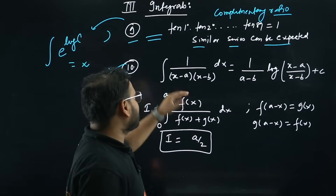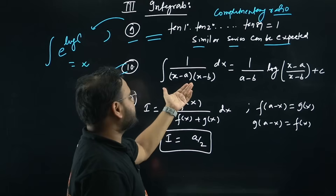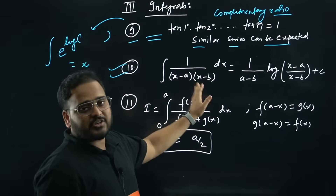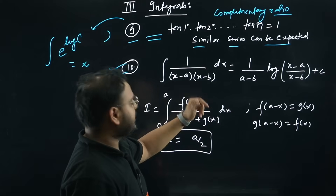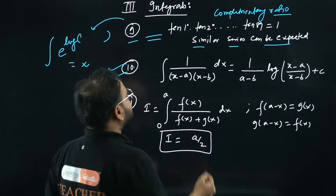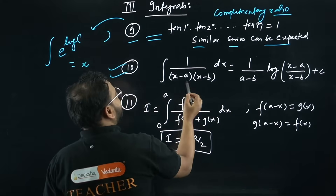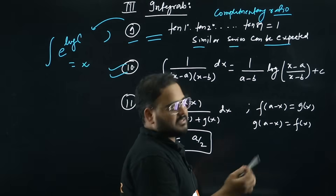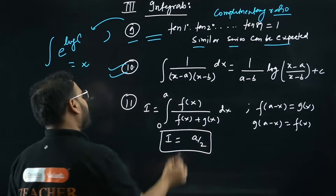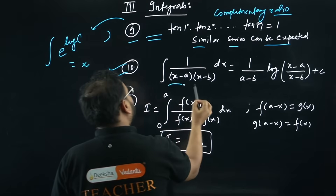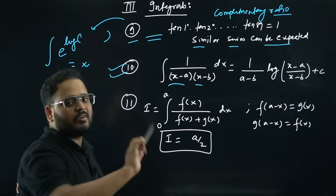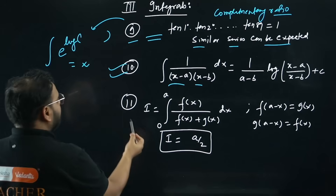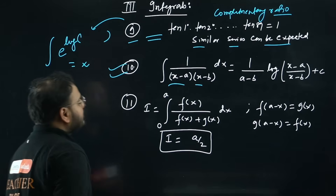Trick 10 is extremely important — this is like a mantra. It involves partial fractions. Whenever you have the form 1/[(x−a)(x−b)], write the result as [1/(a−b)] · log|(x−a)/(x−b)| + C. Straightforward — no need to solve step by step, just directly write in this form.